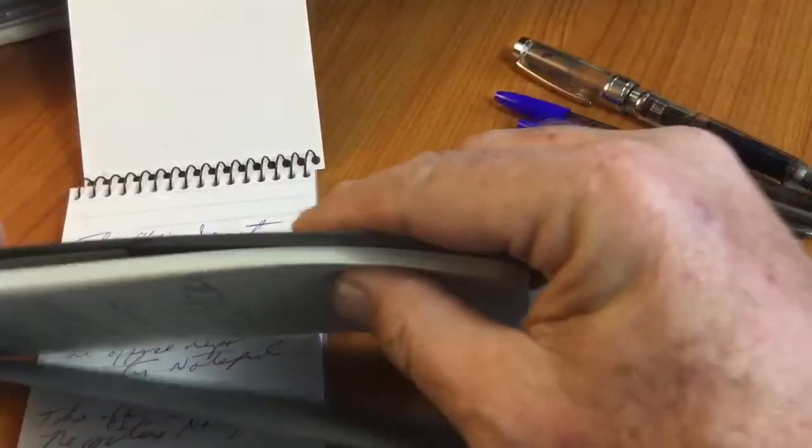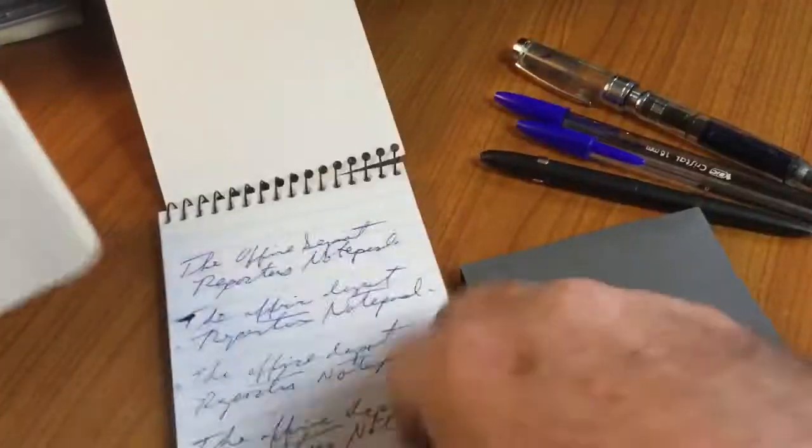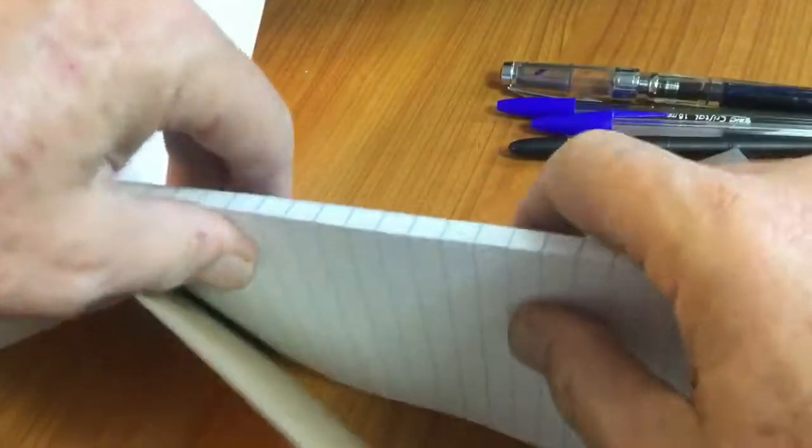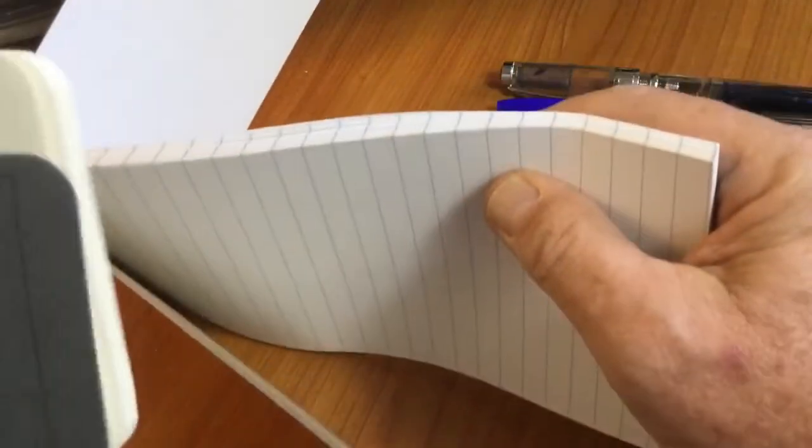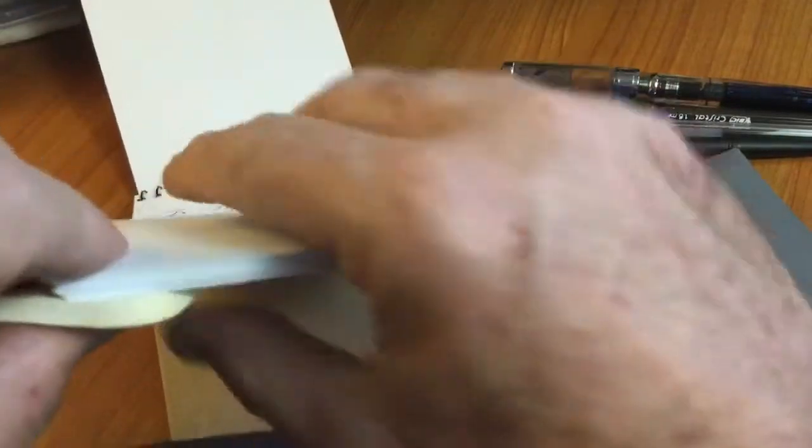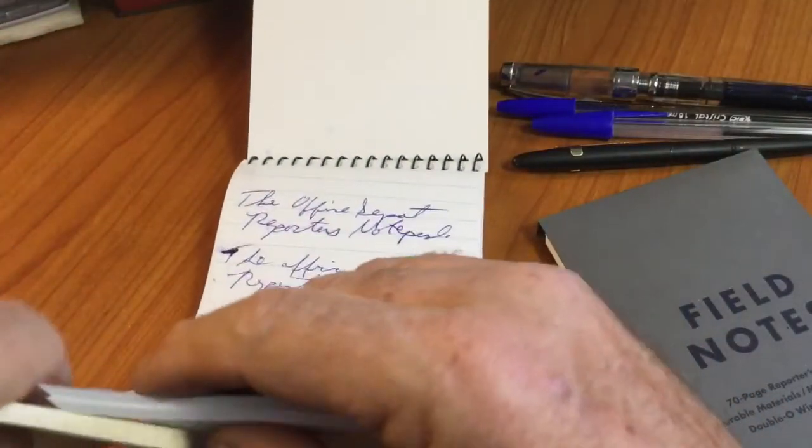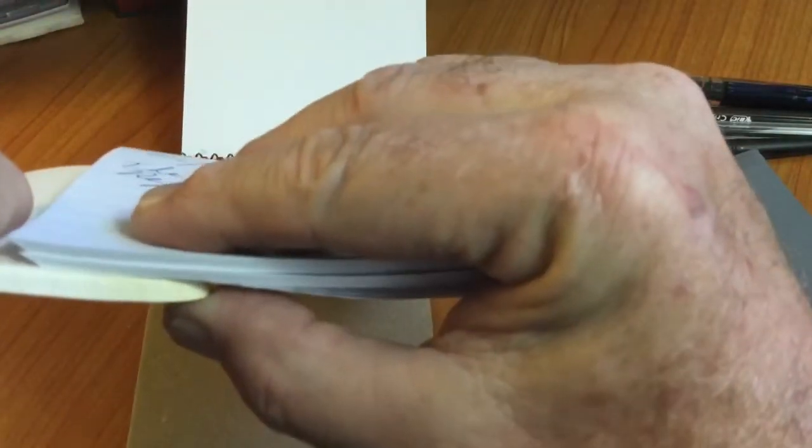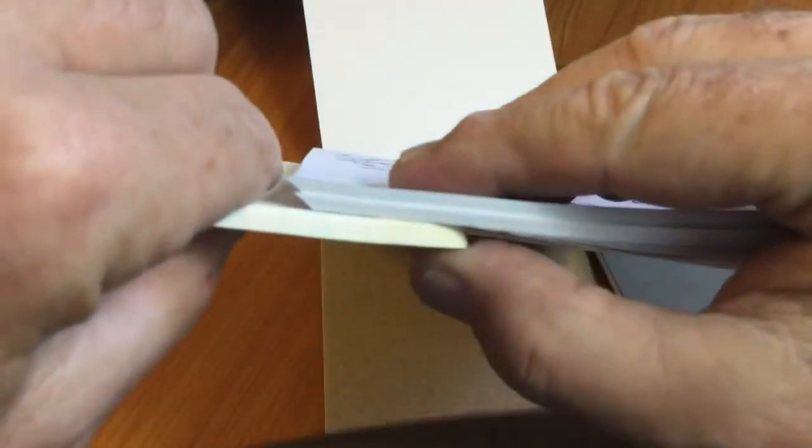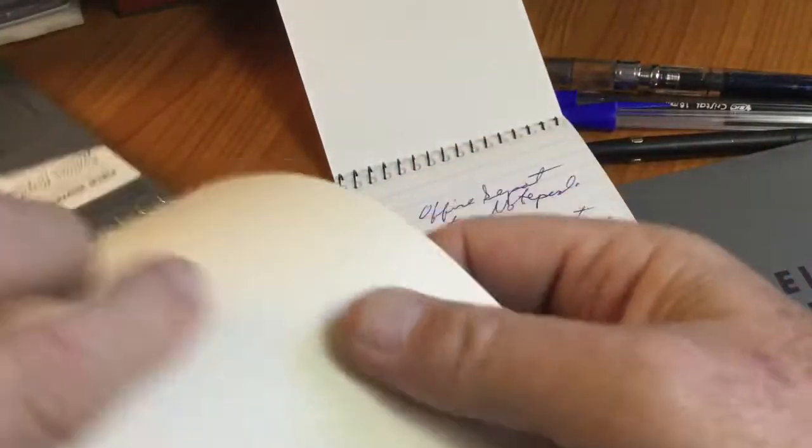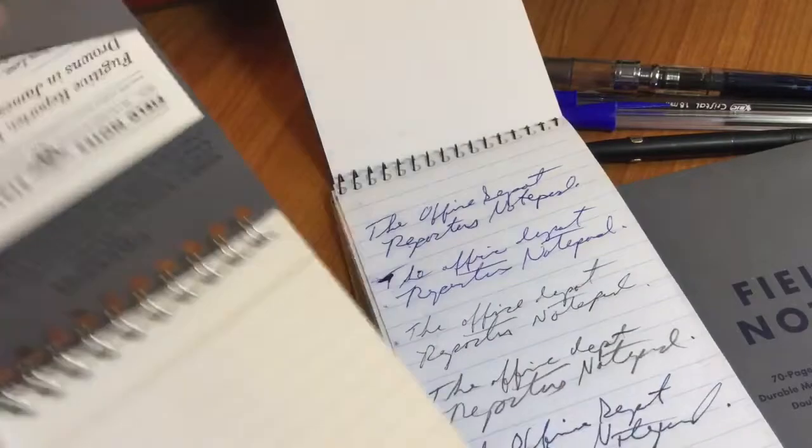And yet it is 70 sheets. So I don't know if there's a way to compare the thickness. This way, you'd have to get a micrometer or something, or calipers and measure it. But it looks like maybe the Field Notes one is slightly thicker. I don't know. It looks pretty close. But this paper definitely feels thicker. Maybe it's just stiffer.